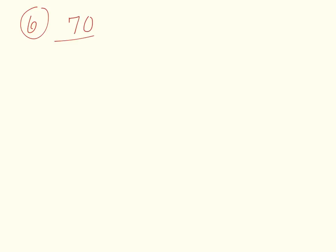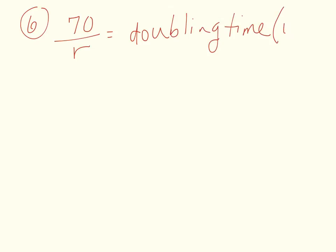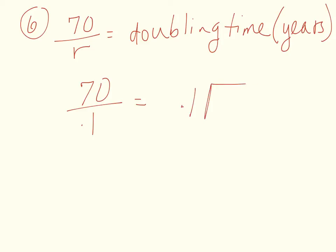Number six: Belgium has a growth rate of 0.1%. How many years will it take to double its population? We use the Rule of 70: 70 over r equals doubling time, and it comes out in years. We're given the growth rate r as 0.1, so we have 0.1 going into 70.